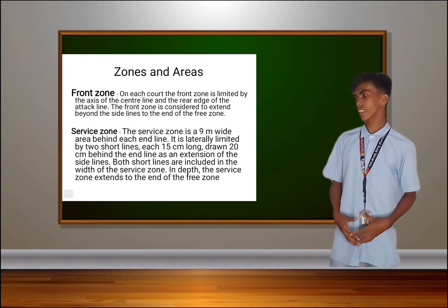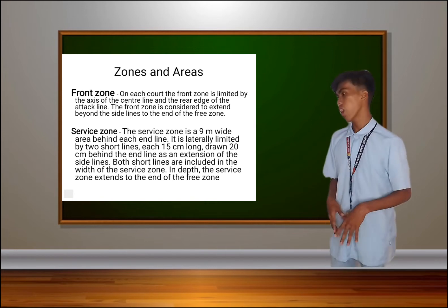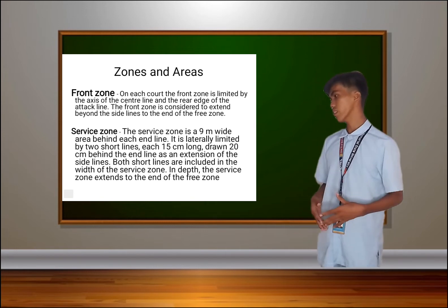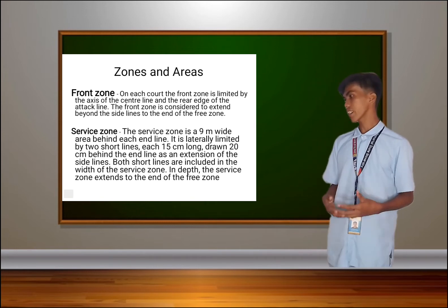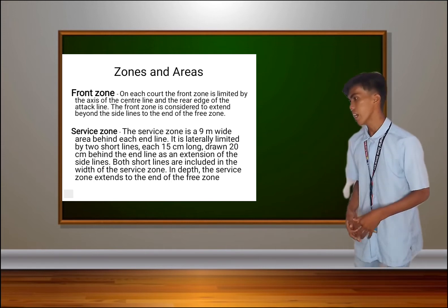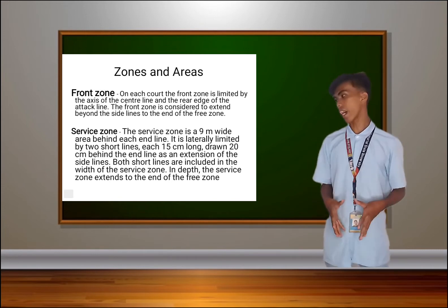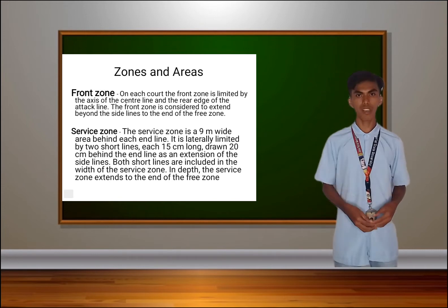Now, our zones and areas. First, let's have the front zones. On each court, the front zone is limited by the axis of the center line and the rear edge of the attack line. The front zone is considered to extend beyond the side lines to the end of the free zone.